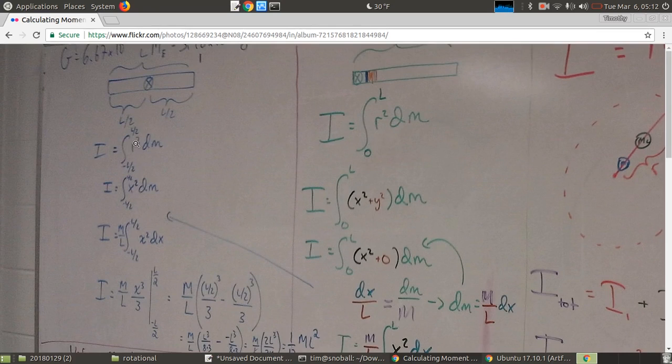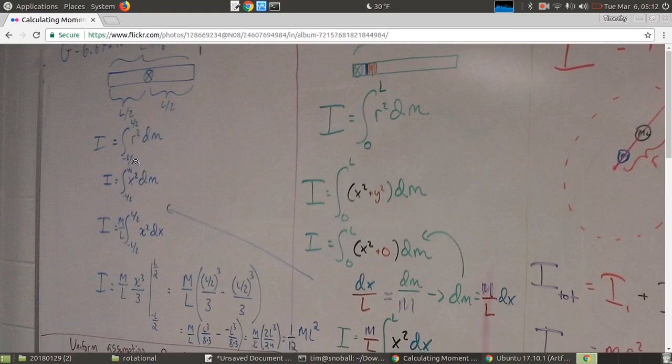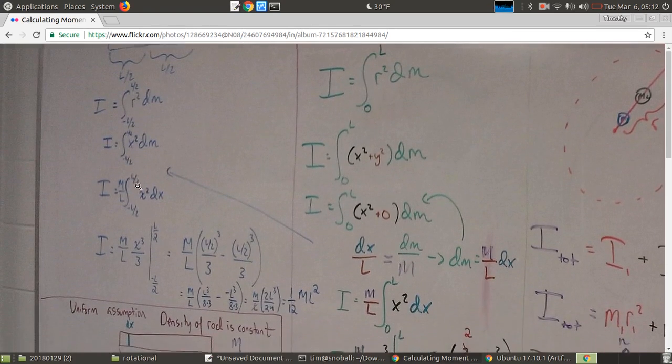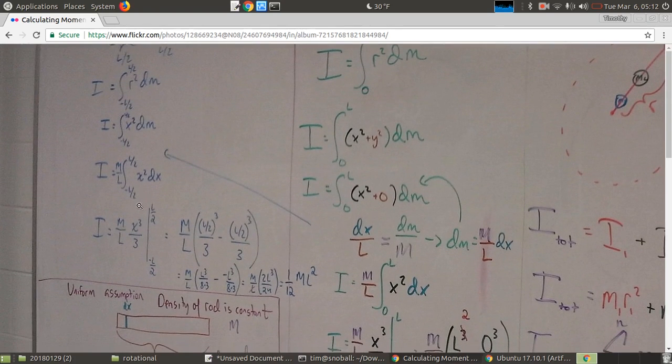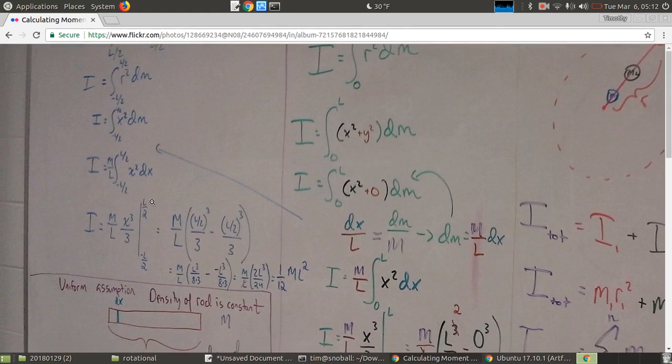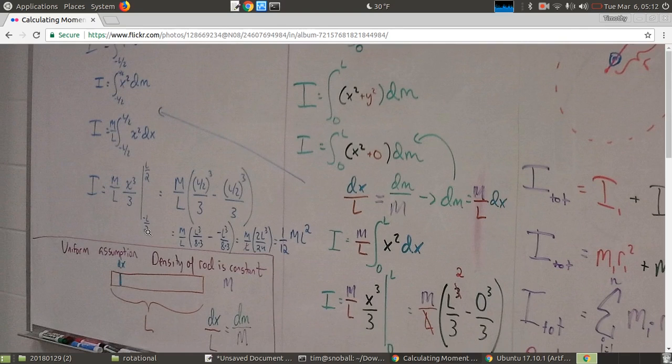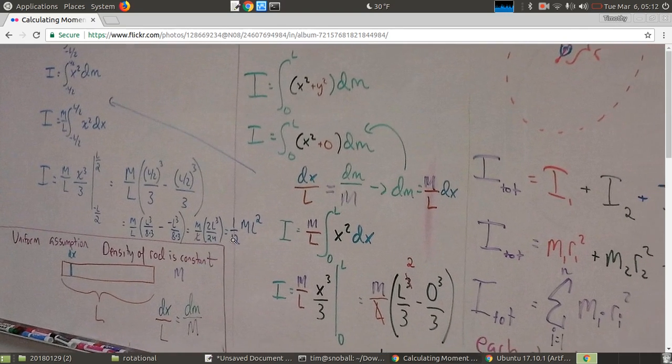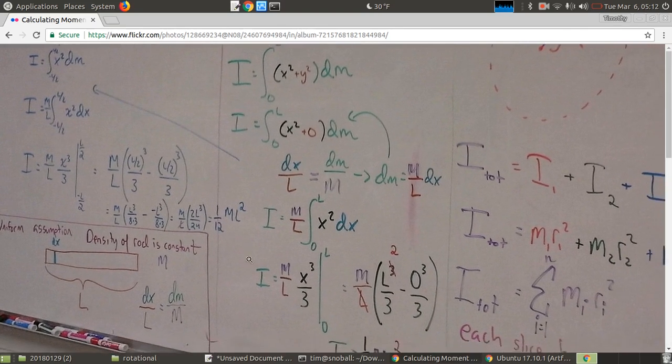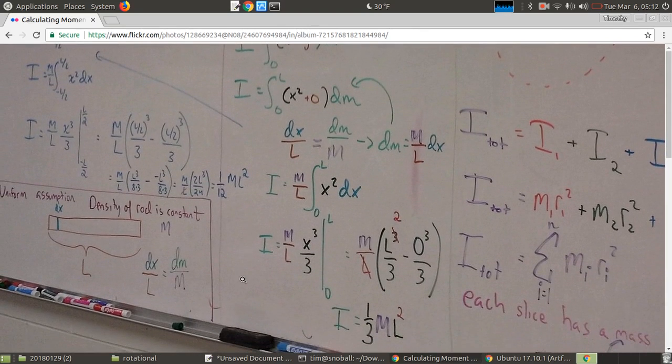So I won't walk through the entire process again. I get down to the same final integral we took with different limits. And again, first we plug in l over 2, and then we subtract the same expression with minus l over 2 in there, and we end up with one twelfth ml squared, which is less than the one-third ml squared we had before.